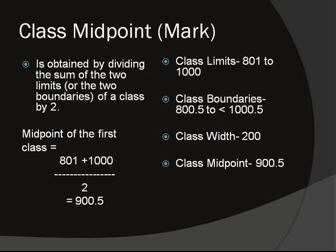Class midpoint or mark is obtained by dividing the sum of the two limits or the two boundaries of a class by two.